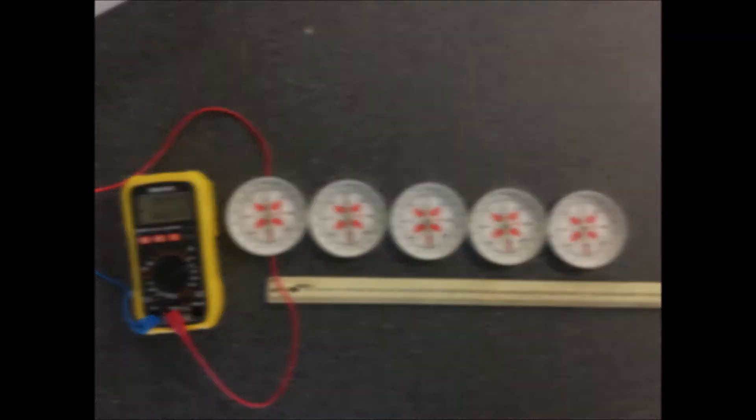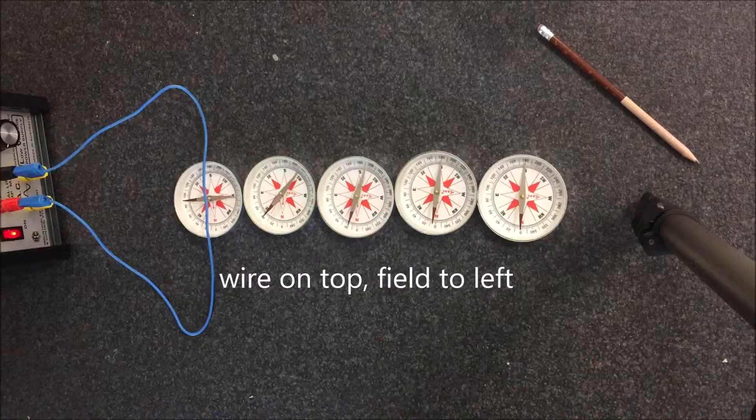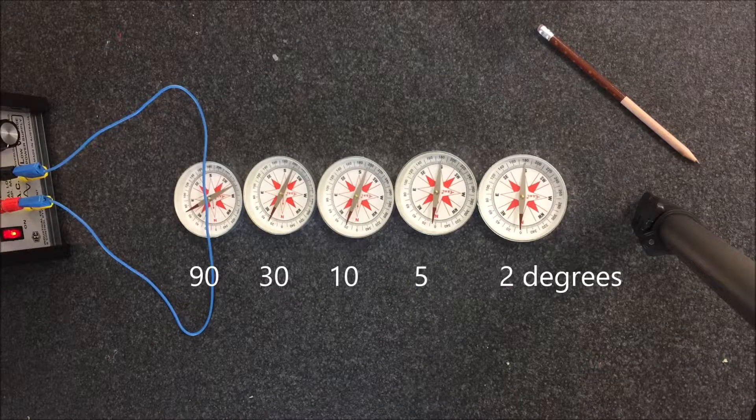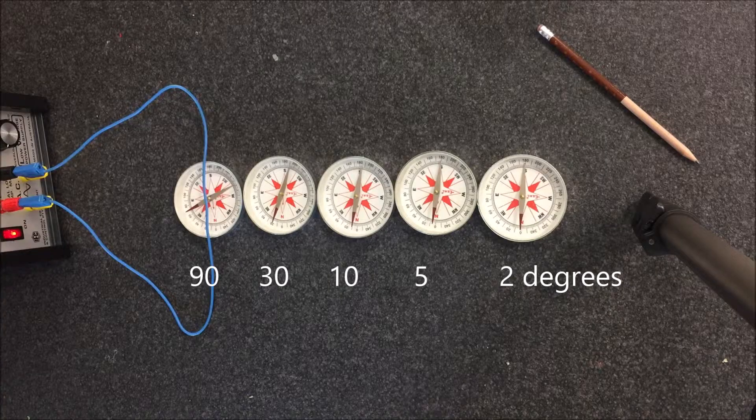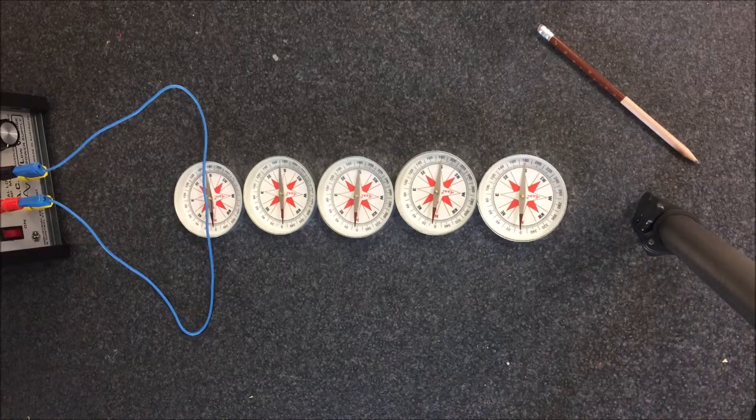Now, this is a repeat of Ersted's experiment. So in the first case, I've got the wire on top of the compass, and you'll notice the deflection is towards the left. The further away from the wire you are, the less the deflection.